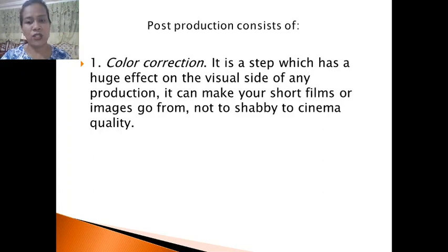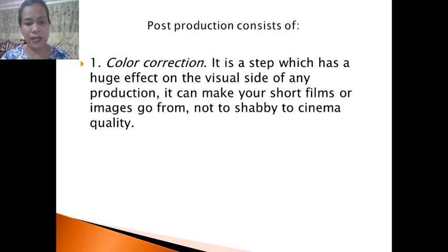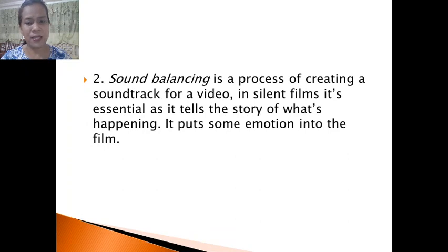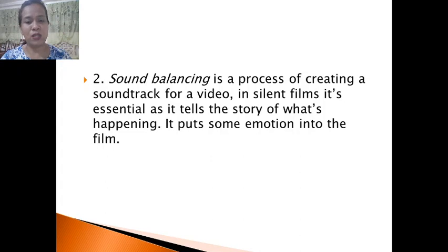Post-production consists of, first, color correction — a step which has a huge effect on the visual side of any production. It can make your short films or images go from not too shabby to cinema quality, that's how much impact it has. Sound balancing is a process of creating a soundtrack for a video; in silent films it's essential as it tells the story and puts emotions into the film.